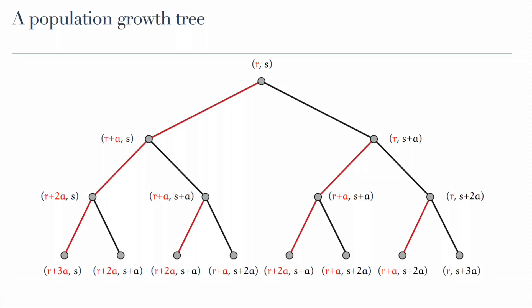This tree now grows with arrivals, and each growth, each branch in the tree, adds A to the population. A branch to the left says that a red ball was drawn, and A red balls were added. So in your first step, you move left, a red branch, and your population moves with a mix of R and S to a mix of R plus A and S.